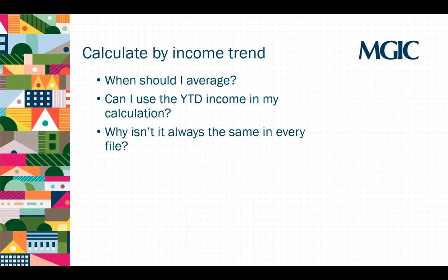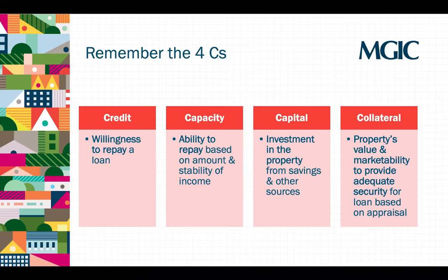You may wonder why sometimes you get different answers and varying income calculations out of underwriting. The answer is this is an area of subjectivity due to the underwriter's analysis of the risk present throughout the entire loan file. Due to different circumstances in every loan file, the methodology of income calculation will not always follow the same path. Remember the four C's? When assessing the overall risk of the file, we look into all of these areas: credit, capacity, capital, and collateral.